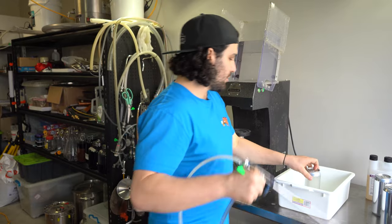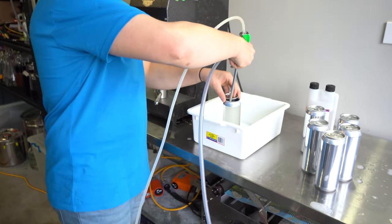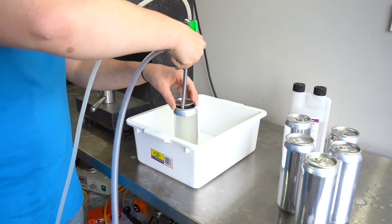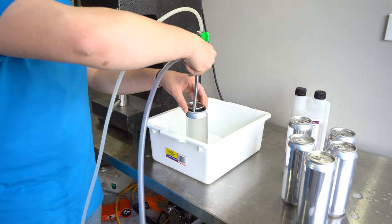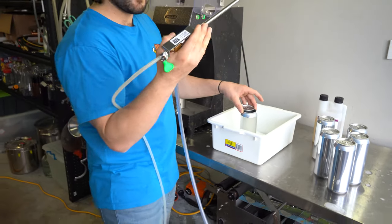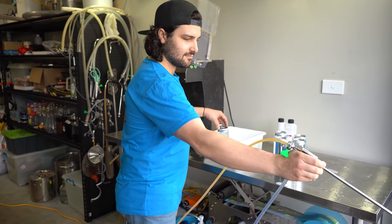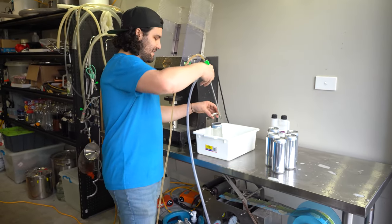So first things first, let's purge this can. And just do it for a couple seconds, basically you're just trying to flush out all the oxygen and make a little blanket of CO2 in there. Next thing is open up the beer line, you start filling it up with beer. I'm just going to quickly do that for a second. All right now I'm good to go.